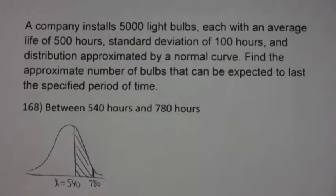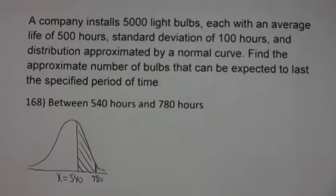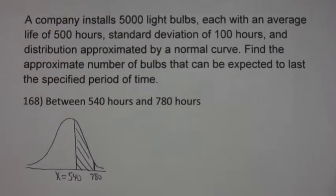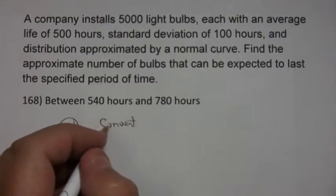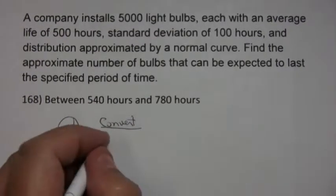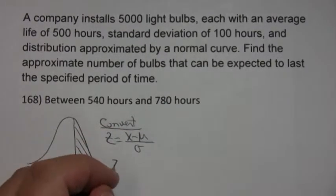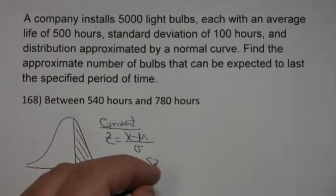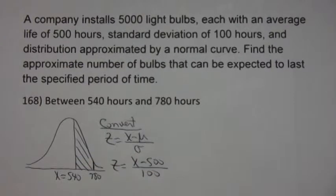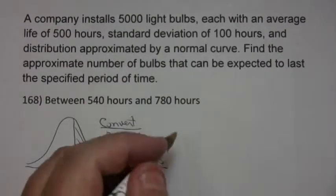Those are x values. Now I know that I can't look up the x values directly, so I've got to convert using the formula z equals x minus mu over sigma. In this case, mu is 500 and sigma is 100.